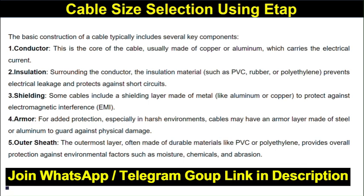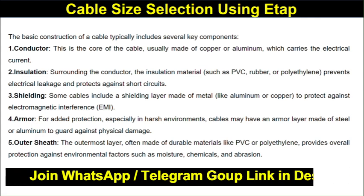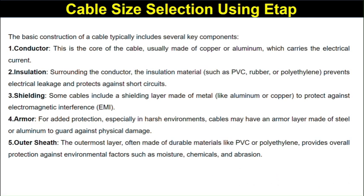Insulation surrounds the conductor. The insulation materials are generally PVC, rubber, polyethylene, or cross-linked polyethylene. It prevents electrical leakage and provides protection against short circuits.